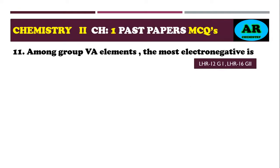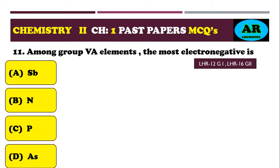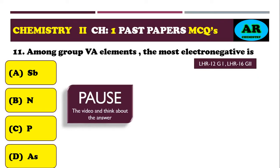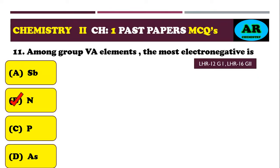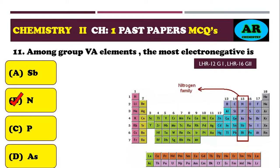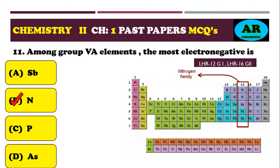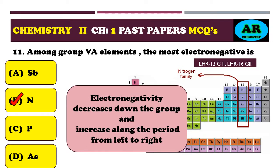MCQ 11: among group 5A elements, the most electronegative is — option alpha: Sb, option beta: N (nitrogen), option charlie: P, option delta: As. The correct option is beta — nitrogen. In the nitrogen family, electronegativity decreases down the group, so nitrogen at the top is the most electronegative element.